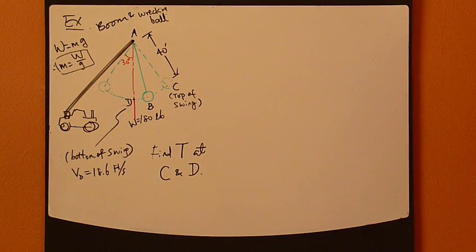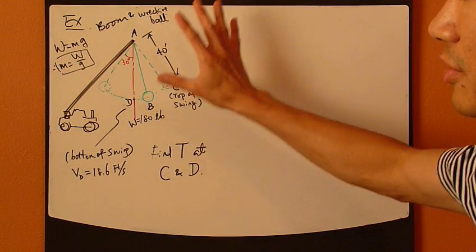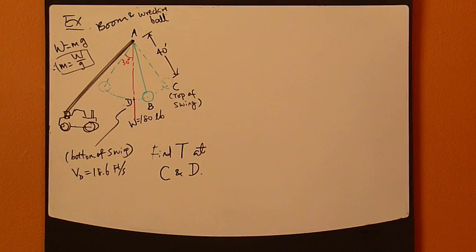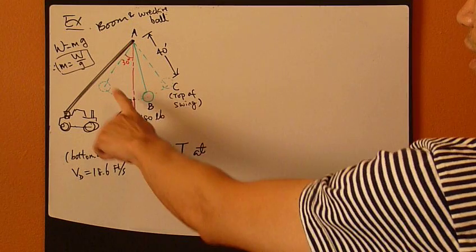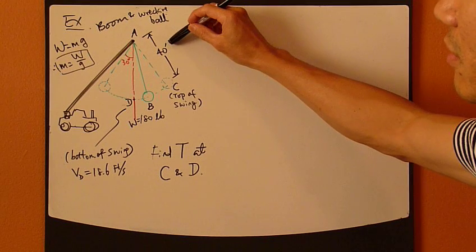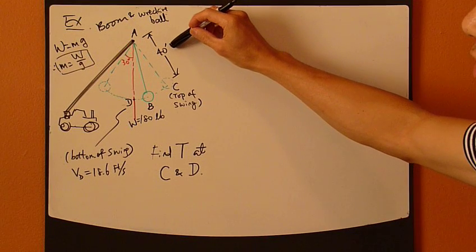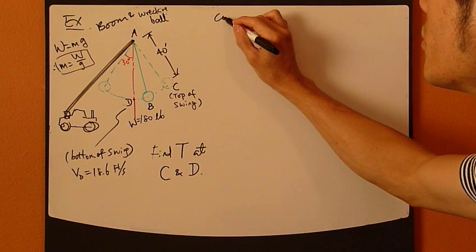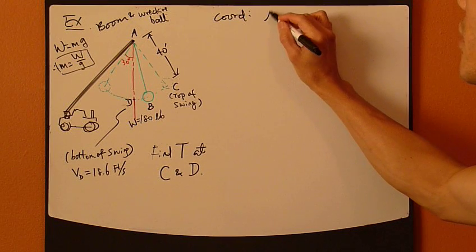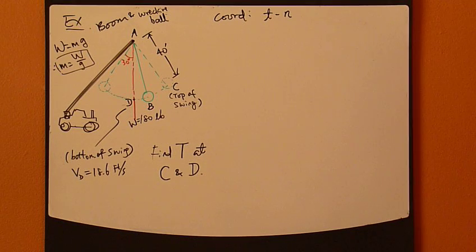So now we involve a different kind of coordinate system. So let's go ahead and set it up. Step one, coordinate system. Recognize that this has a constant radius of curvature, which is 40 feet. So maybe a more convenient coordinate system is tangent normal.